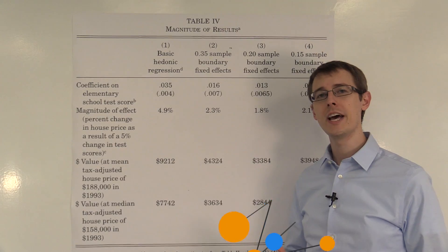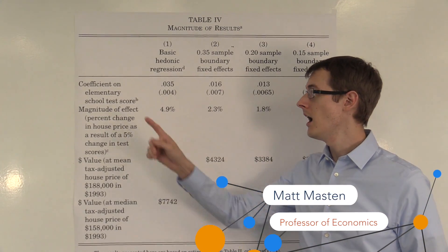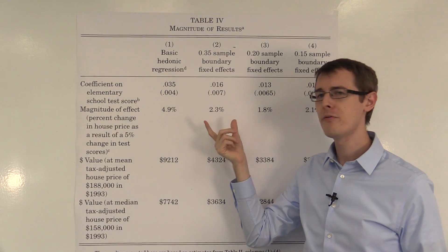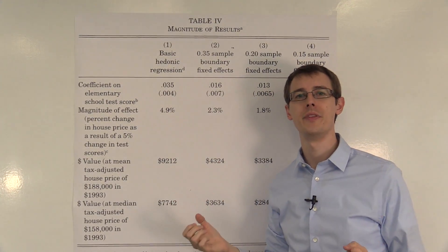So we've just seen the regression estimates of the causal effect of test score on house prices. But what do those coefficients mean? What exactly, how do we interpret them?